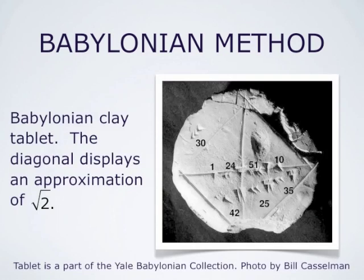Here you see a Babylonian clay tablet. The diagonal displays an approximation of the square root of 2. These Babylonian clay tablets suggest that Babylonians were not only able to approximate square roots of numbers, but also most likely were aware of the theorem of Pythagoras, long before Pythagoras. This picture is from the Yale Babylonian collection; the photograph is by Bill Kesselman.